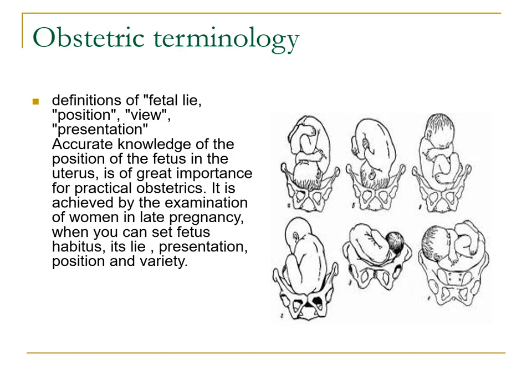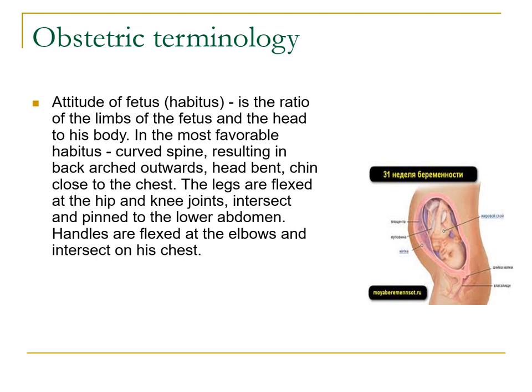For definitions of your fetal lie, position, and presentation, accurate knowledge of the position of the fetus in the uterus is of great importance for practical obstetrics. It is achieved by the examination of women in late pregnancy, when you can set the fetal habitus, lie, presentation, position, and variety. The attitude of the fetus is the ratio of the limbs and head to the body. In the most favorable habitus, the fetus is in a curved spine resulting in the back arched upwards, head bent, chin close to the chest, legs flexed at the hip and knee joints, and handles flexed at the elbows and crossed on the chest.